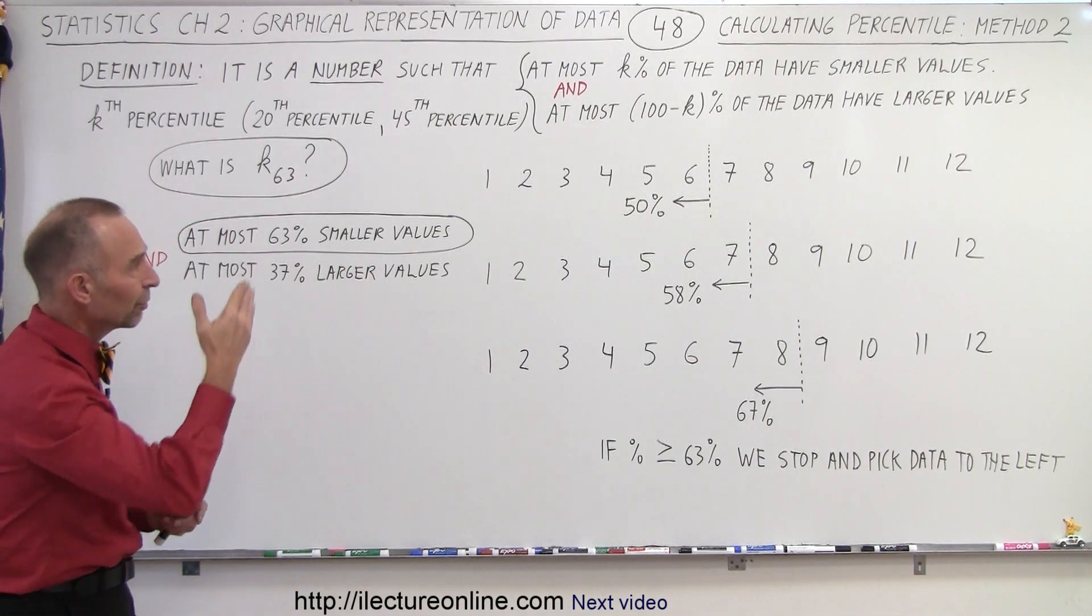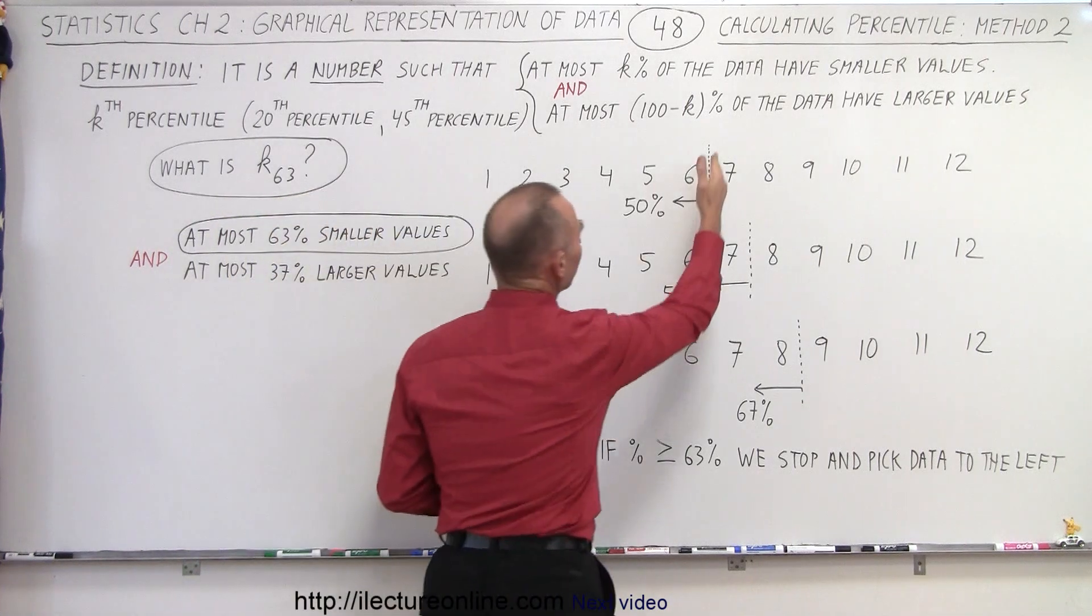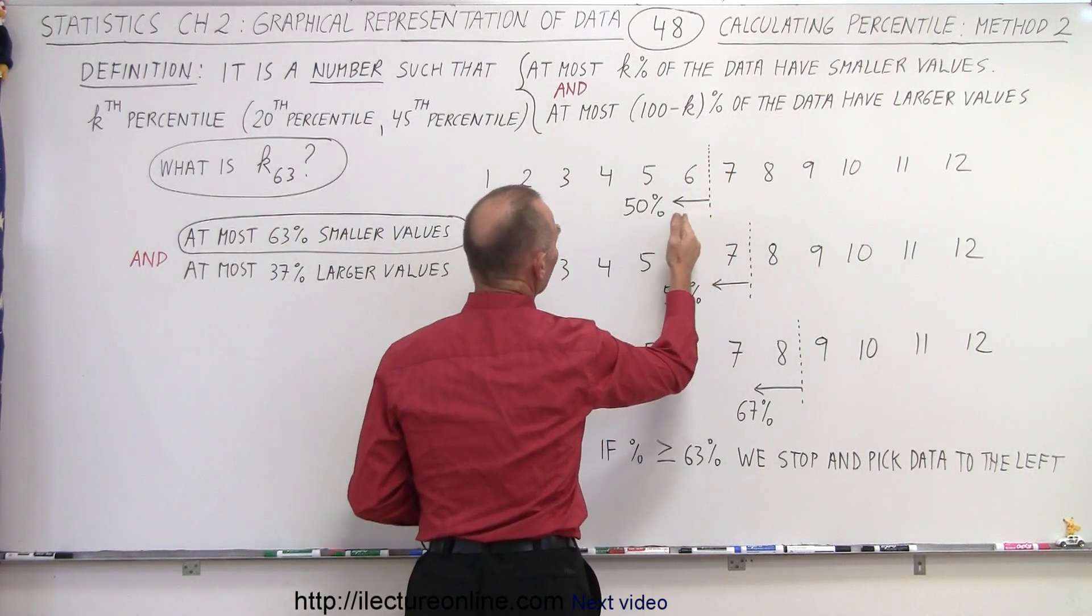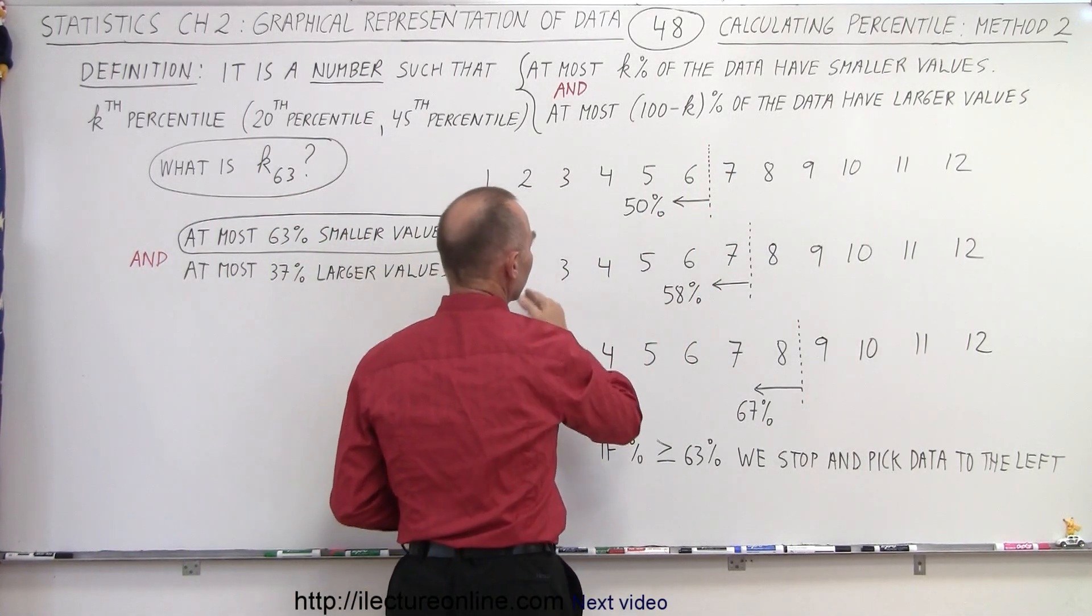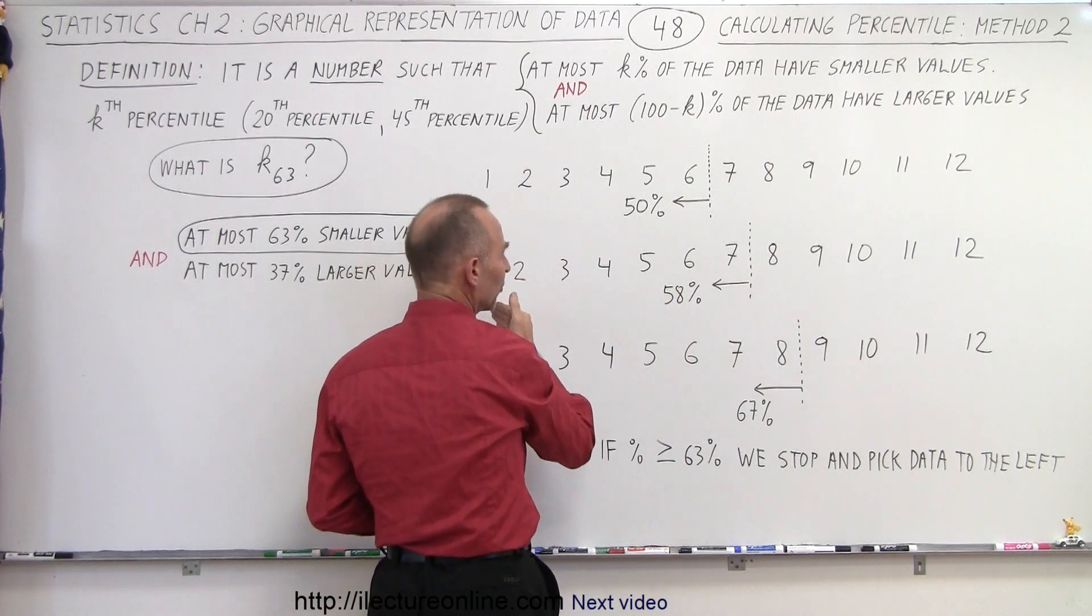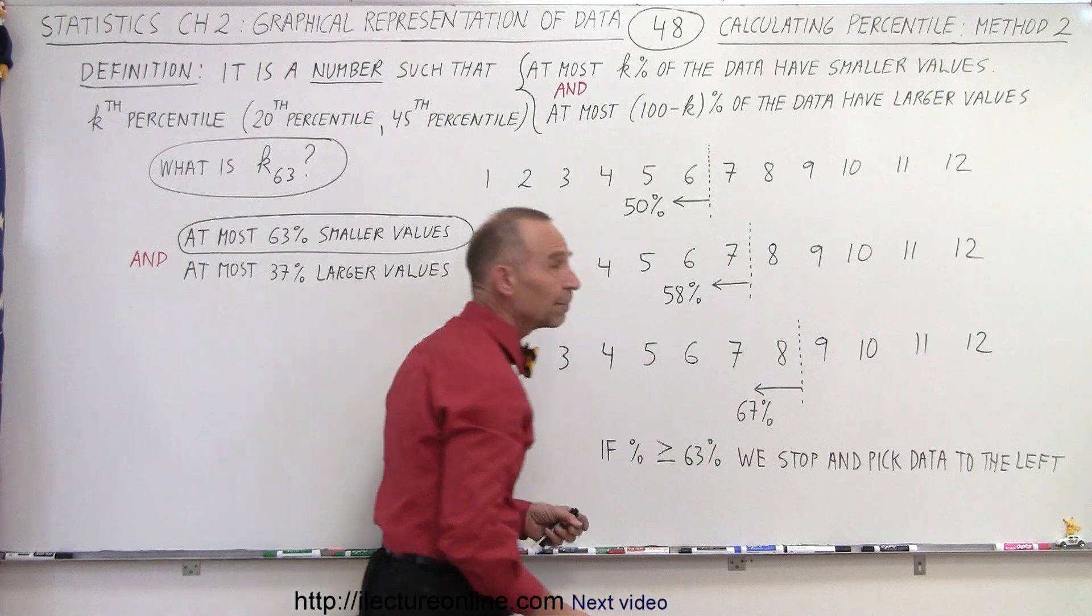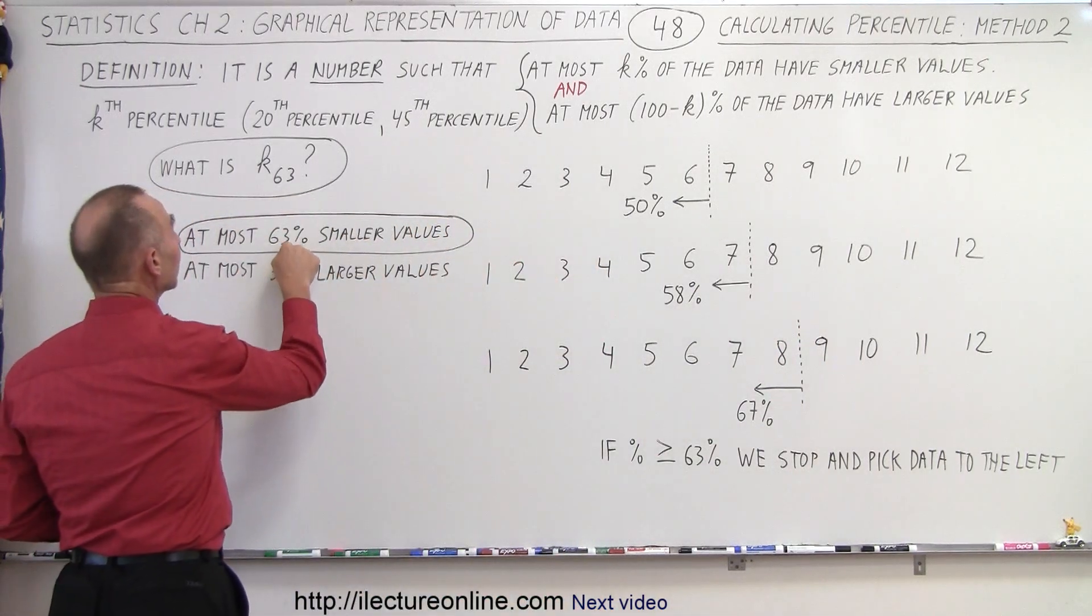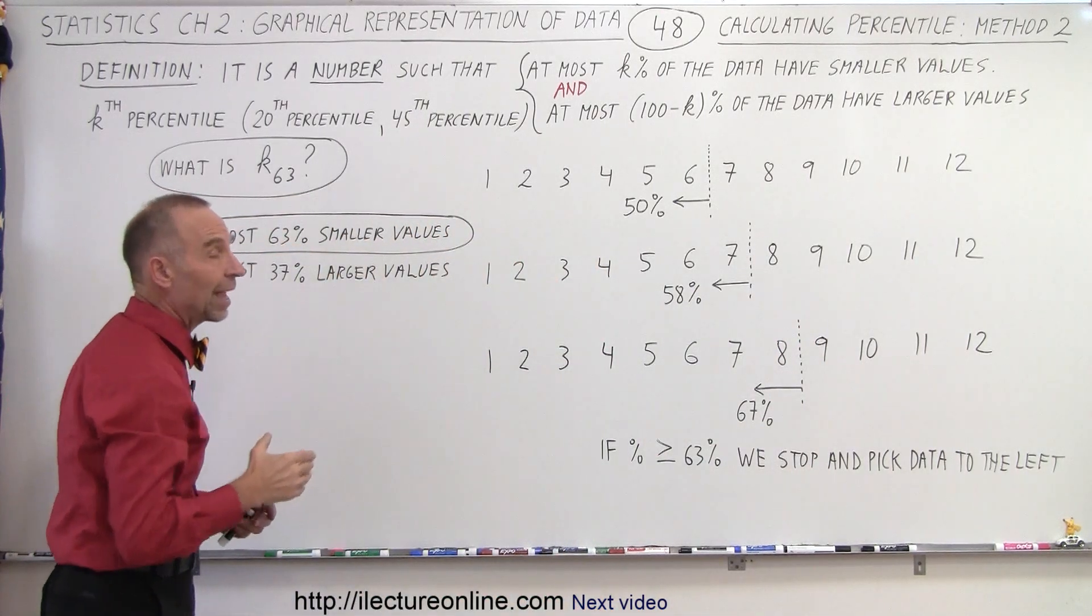So what we're going to do is we're going to find boundaries. We pick a boundary right here and calculate the number of data points to the left of that boundary. Then we move the boundary point to the right, and we calculate the percentage of the points again to the left, and we keep doing that until we reach a point where it's greater than the value that it's supposed to have.